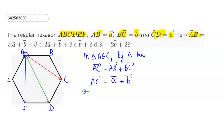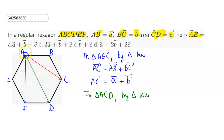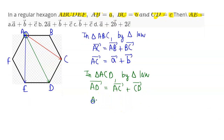Now applying the triangular law again, considering A as the initial point, AD is the resultant vector of AC vector and CD vector. So AD vector equals AC vector plus CD vector, which is a vector plus b vector plus c vector, since CD vector is given as c.